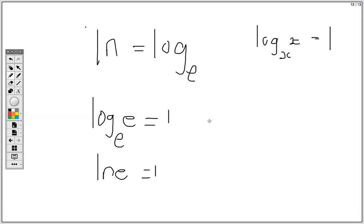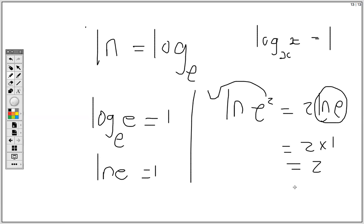So if I give you ln e squared, then it means that I can bring the power in front because ln is the same rule as log. So you bring the power in front. So I have 2 ln e, then we know that ln e is 1. So this is 2 times 1 to give me 2. So here my answer is 2.